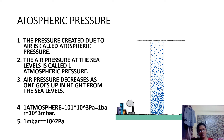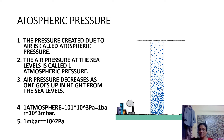We conclude that air pressure at sea level is called atmospheric pressure, and air pressure decreases as one goes up in height from sea level. One atmosphere is equal to 1×10³ pascal, which is the unit of pressure, and that is equal to one bar, which equals 10³ millibar.